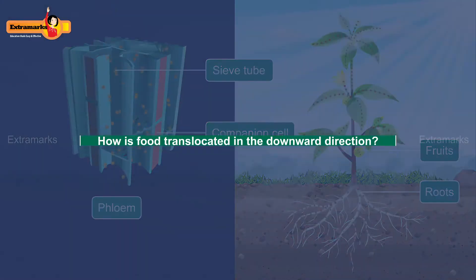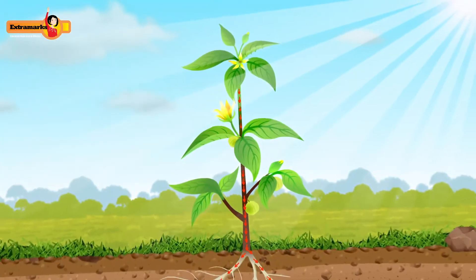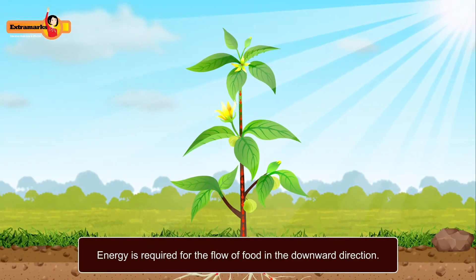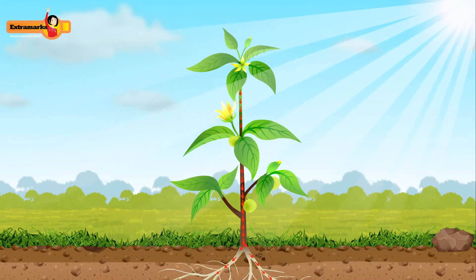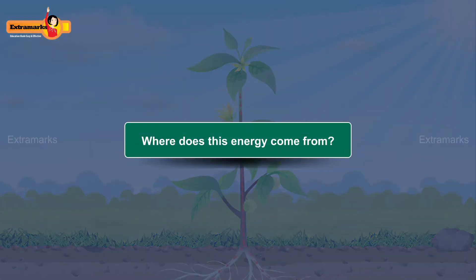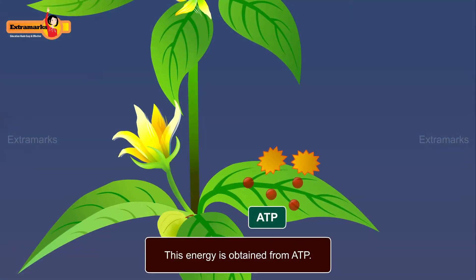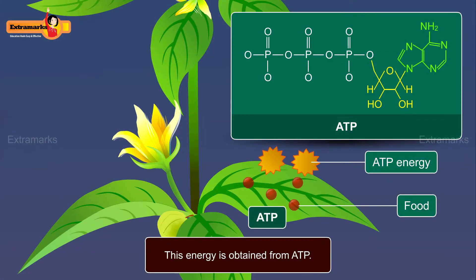Have you ever wondered how food is translocated in the downward direction? Energy is required for the flow of food in the downward direction. Thus, translocation of food is not a simple physical process — this energy is obtained from ATP.